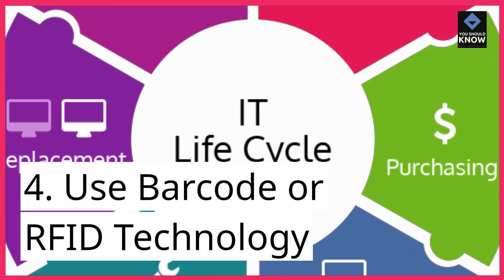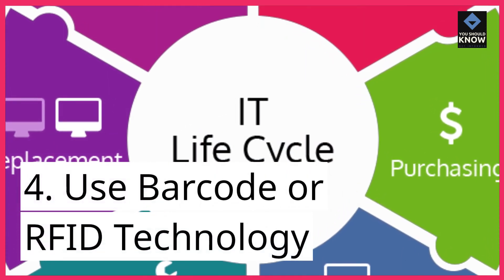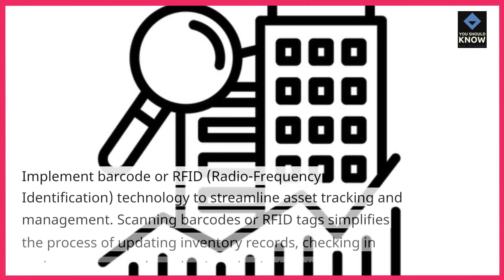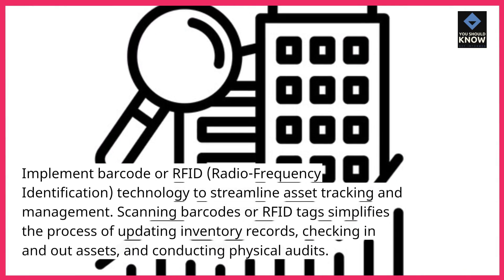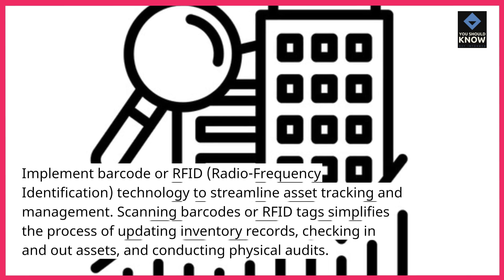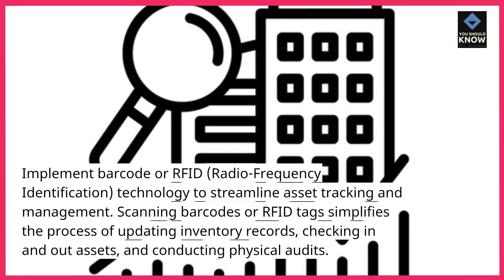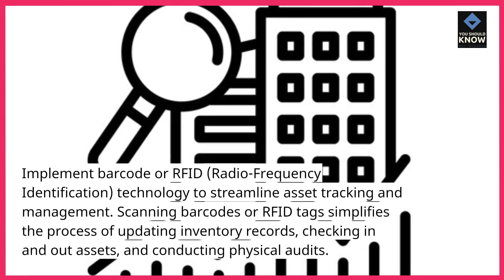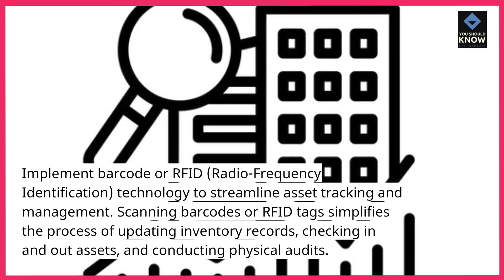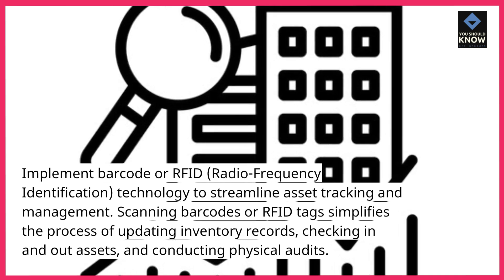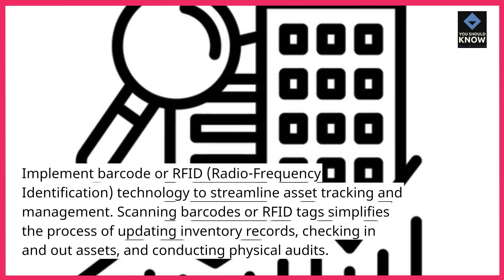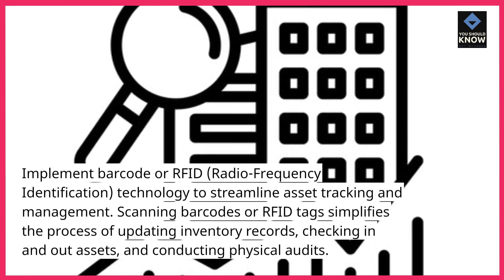Tip 4: Use barcode or RFID technology. Implement barcode or RFID — radio frequency identification — technology to streamline asset tracking and management. Scanning barcodes or RFID tags simplifies the process of updating inventory records, checking in and out assets, and conducting physical audits.